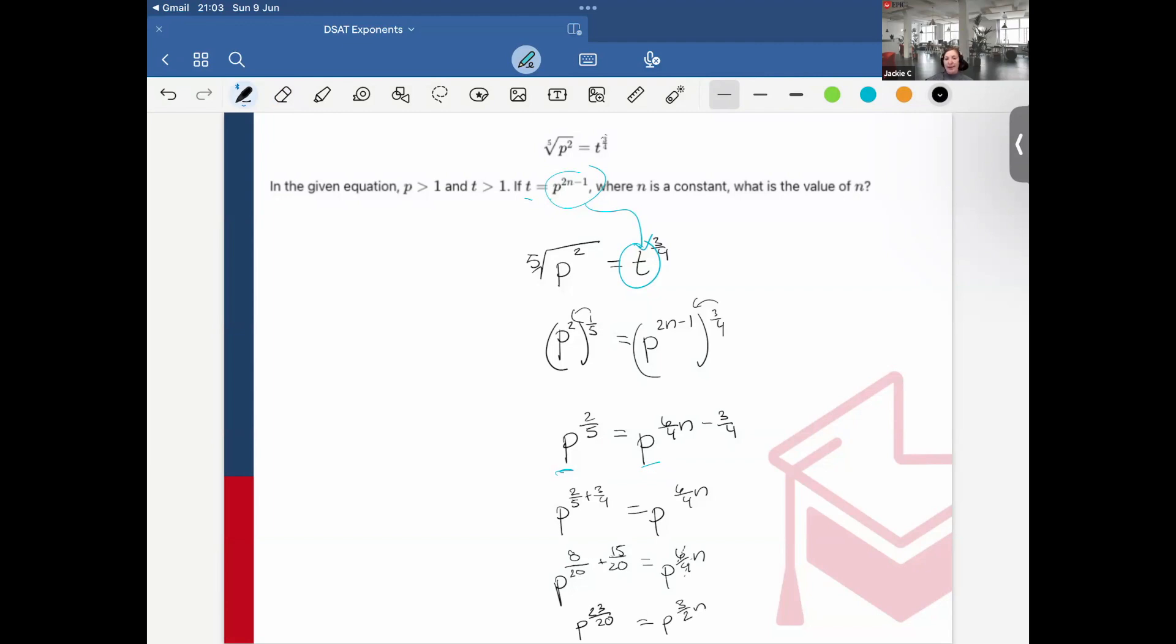So p 23 over 20 is equal to 3 halves n. Okay, I'm just going to take these now, set them equal to each other. So I have 23 over 20 is equal to 3 halves n. So cross multiply, and I would have that 46 is equal to 60n. And now divide each side by 60.